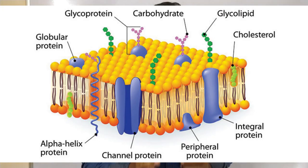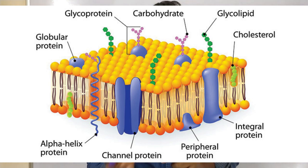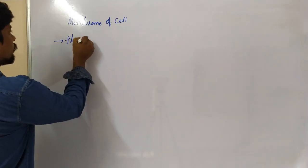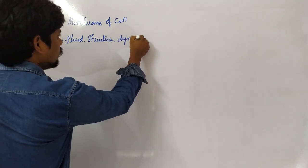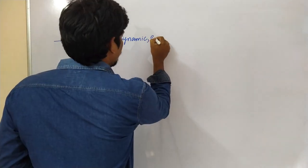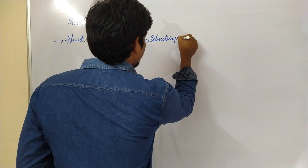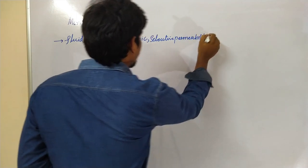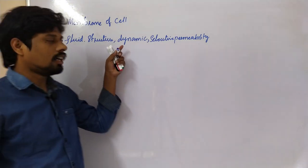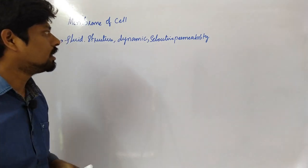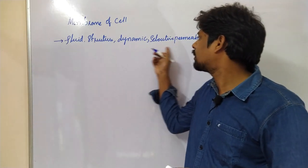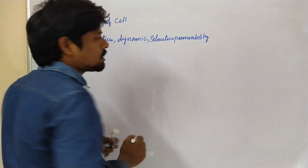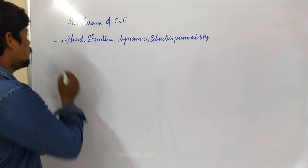The cell contains an outer surface called the cell membrane. We have discussed in previous classes that the cell membrane is a fluid structure and it's dynamic. It allows selective permeability — it permeates only a few selective molecules across the plasma membrane, which is why it's called selectively permeable.